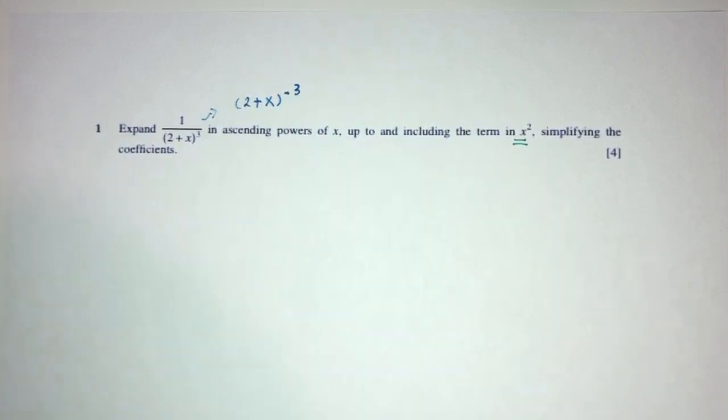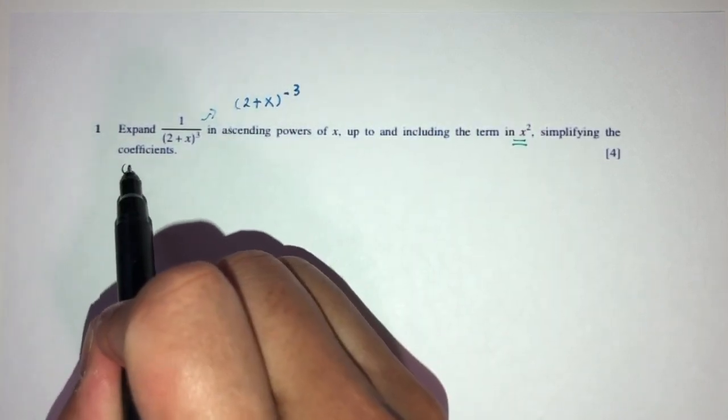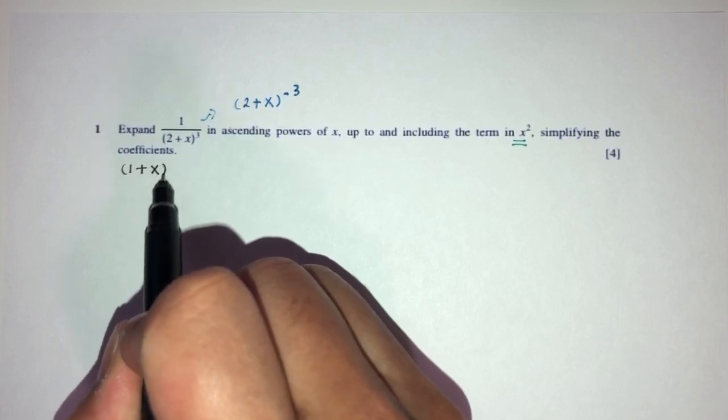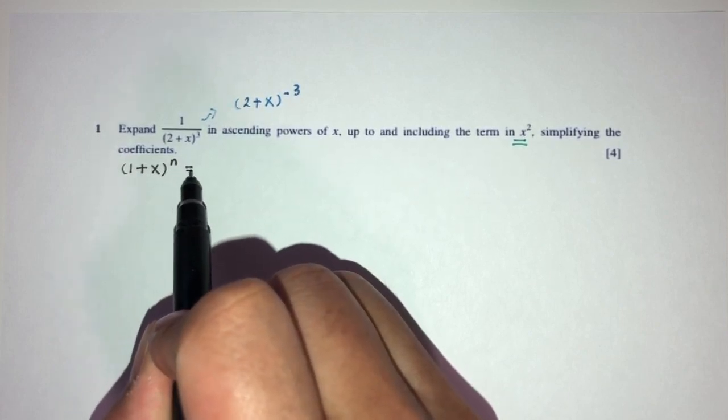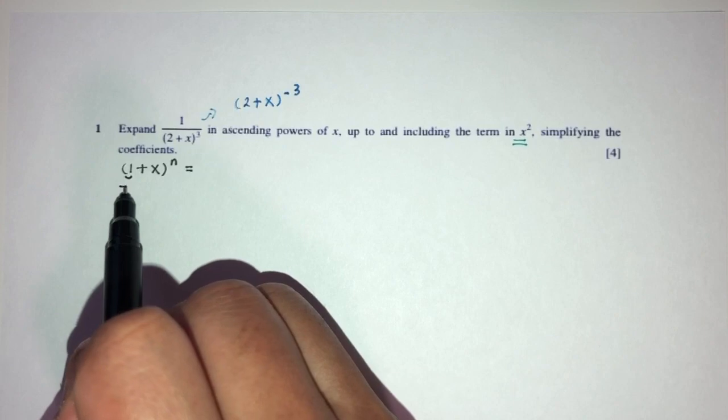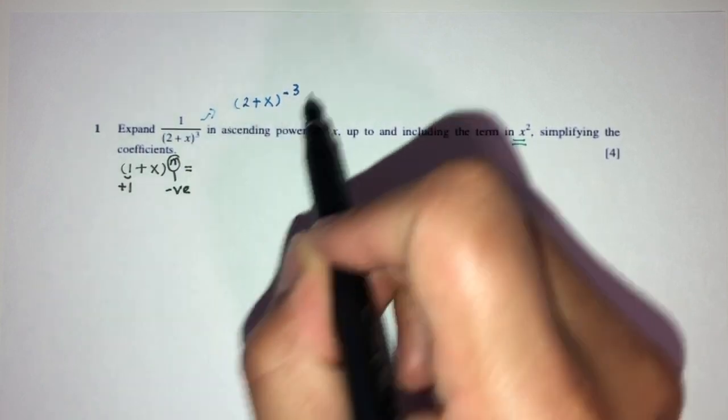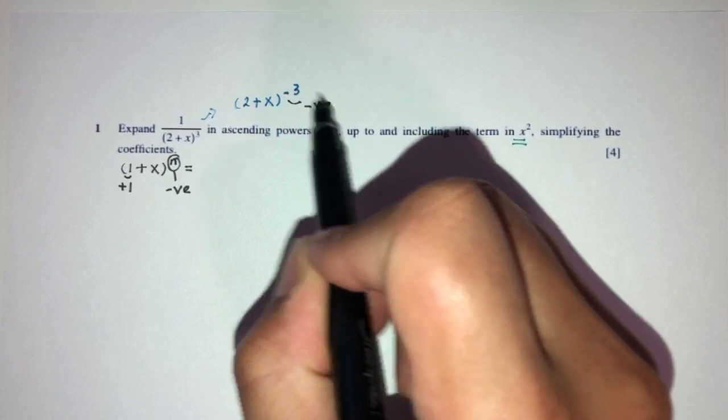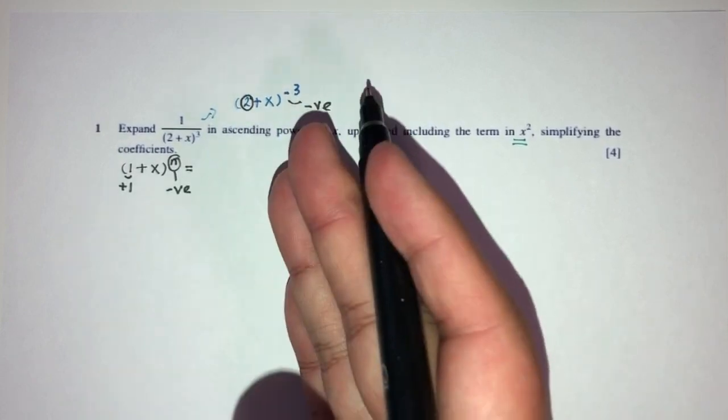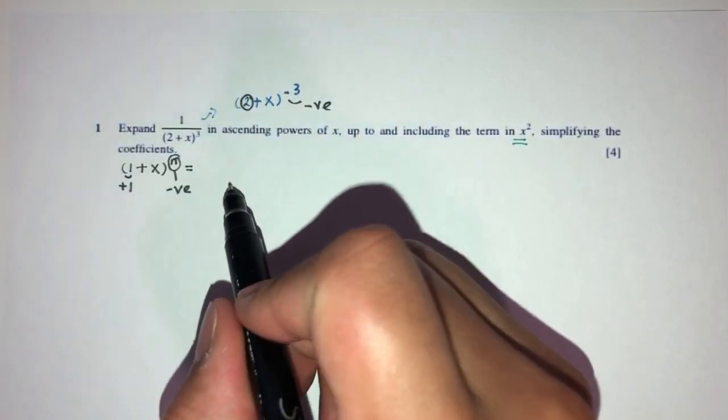Now, we have to know something. To be able to use our formula, which is 1 plus x power n for the binomial expansion, this has to be plus 1, and this has to be negative. So this is good, negative, but this has to be plus 1. So we have to factorize 2 outside.